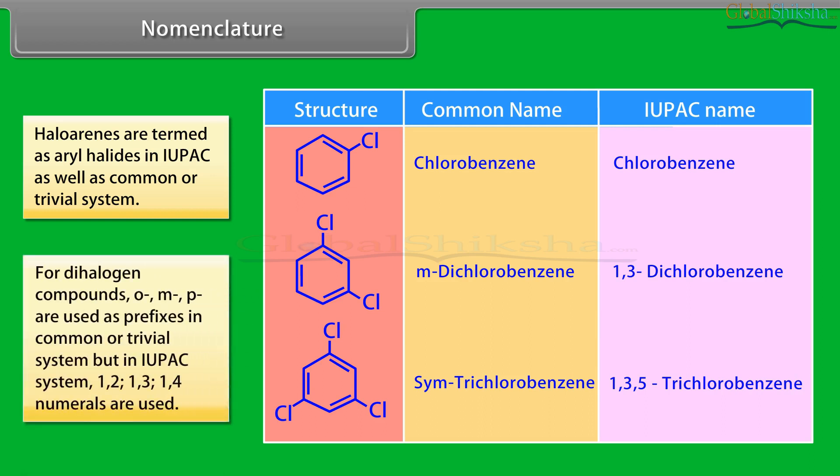For dihalogen compounds, ortho and meta-para are used as prefixes in common or trivial system, but in IUPAC system, 1,2, 1,3 and 1,4 numerals are used.